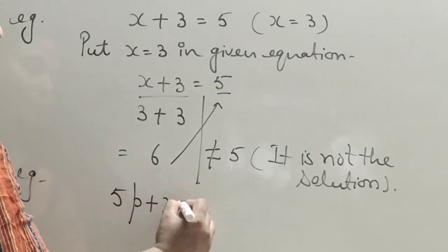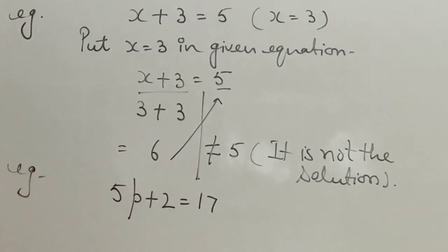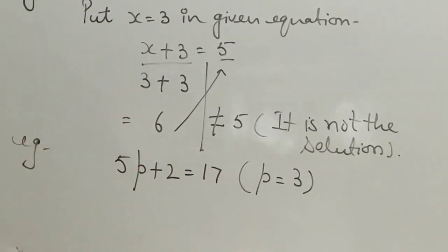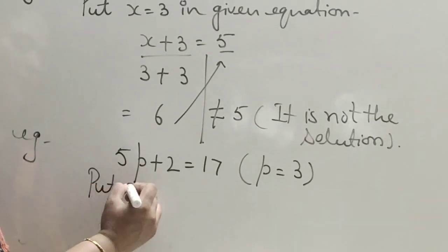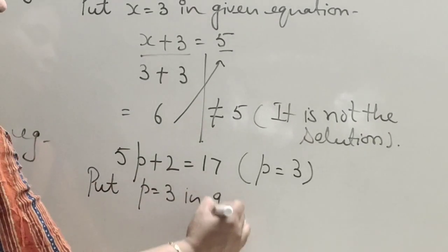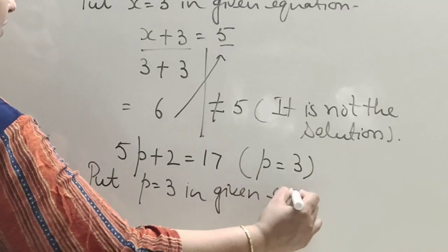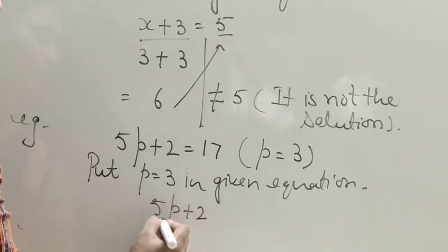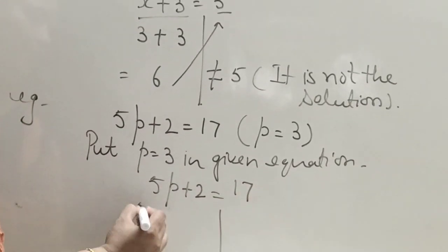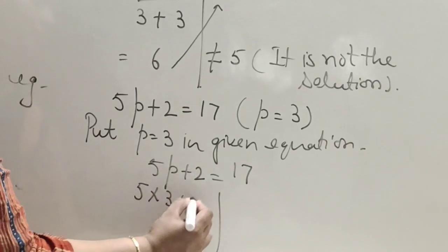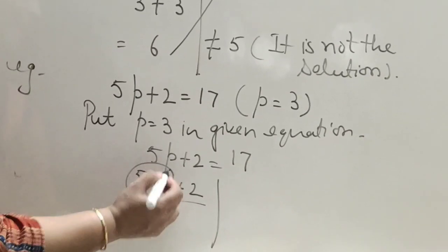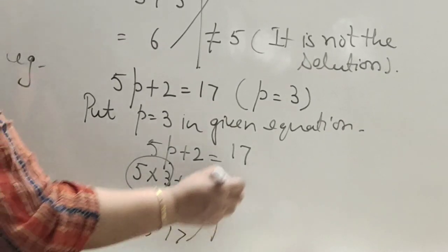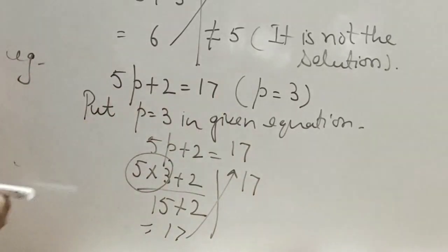Taking another example: 5P plus 2 is equal to 7, and the given value is P equals 3. We put P equals 3 into the equation. According to BODMAS, we first multiply: 5 into 3 is 15, plus 2 gives 17. But the right-hand side is 7, and 17 does not equal 7.